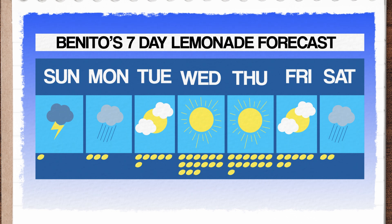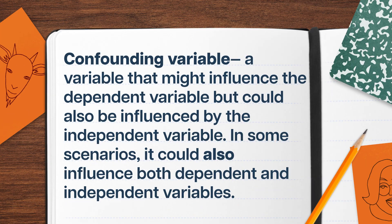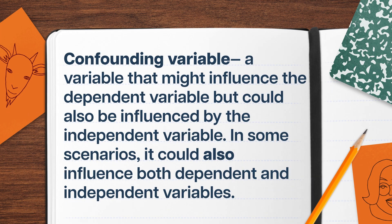If that's true, even a cloudy day where a major road is shut for repairs might increase Benito's sales as people opt for walking and pass his stand — unfortunately, they'll also be headed past the juice bar, so even as his sales rise, Benito is seething. A variable that might influence the dependent variable but could also be influenced by our independent variable is called a confounding variable. In some scenarios, it could influence both dependent and independent variables. If we don't consider possible confounding variables, we might get the wrong idea about how influential our independent variable really is.